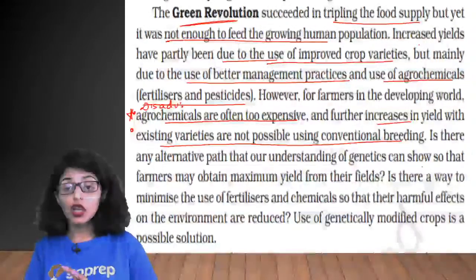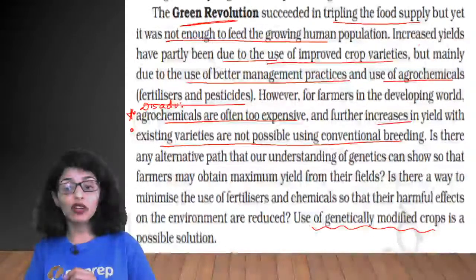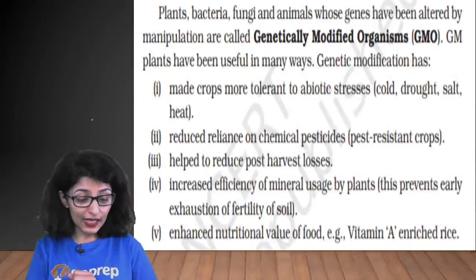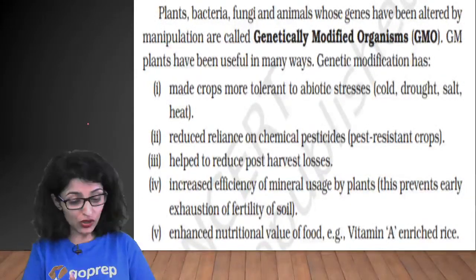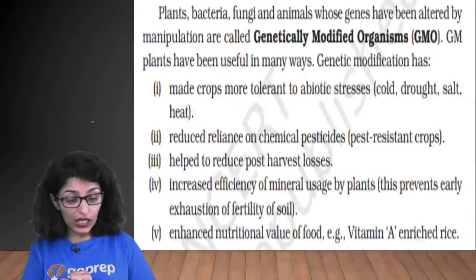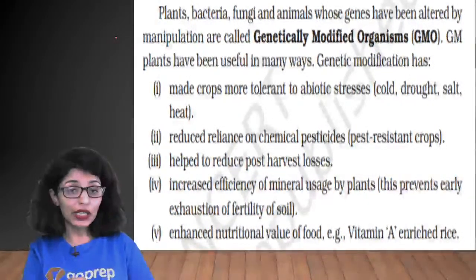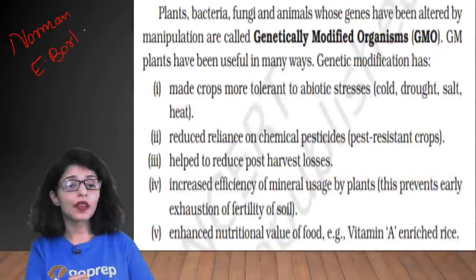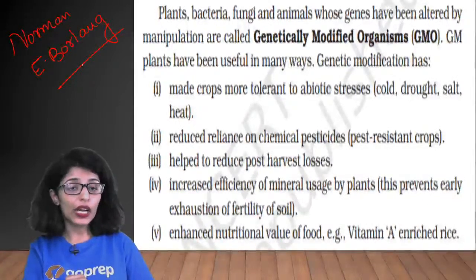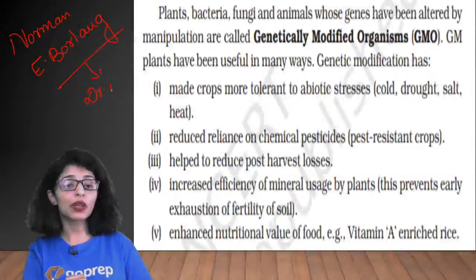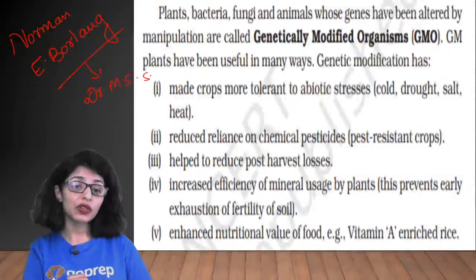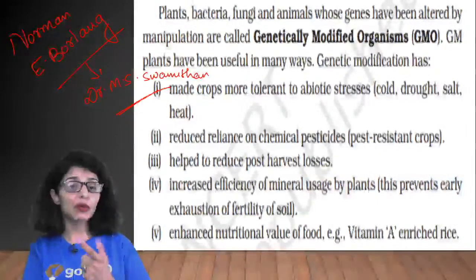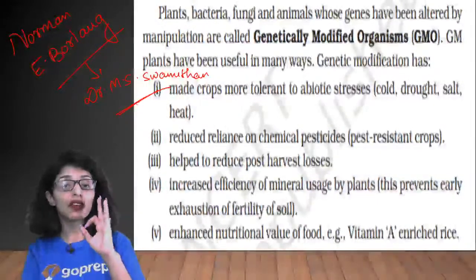The alternative pathway is the use of genetically modified crops. Green Revolution was started by Norman E. Borlaug — father of the Green Revolution — who started it in Mexico. In India, Dr. M.S. Swaminathan is the father of the Indian Green Revolution. Similarly, White Revolution is for milk production and Blue Revolution is for fisheries. Plants, bacteria, fungi, and animals whose genes have been altered or manipulated are called GMOs.